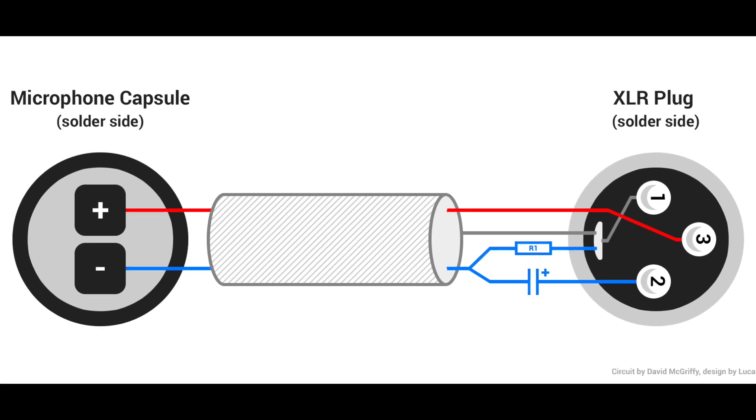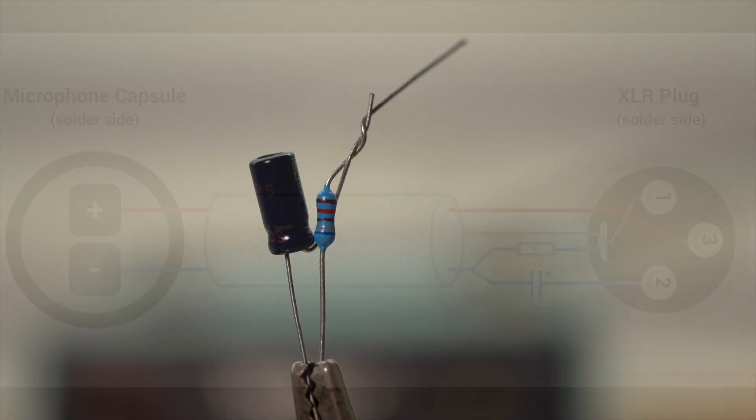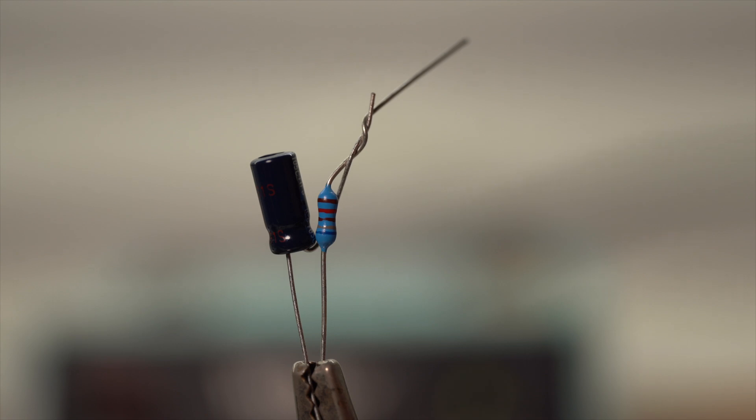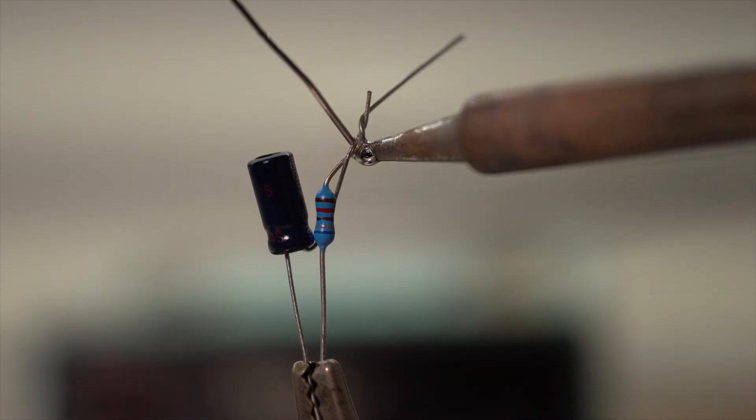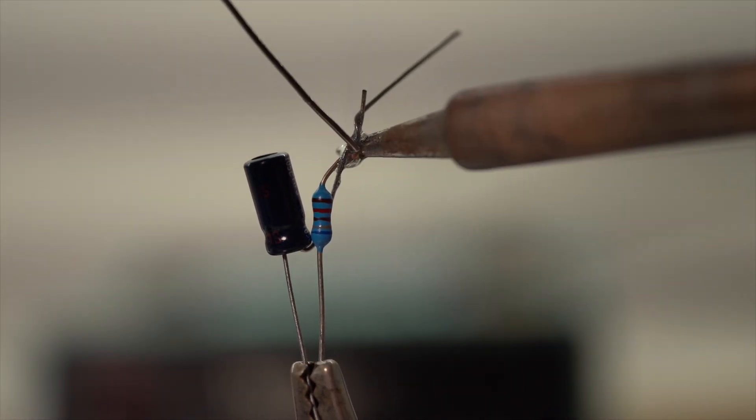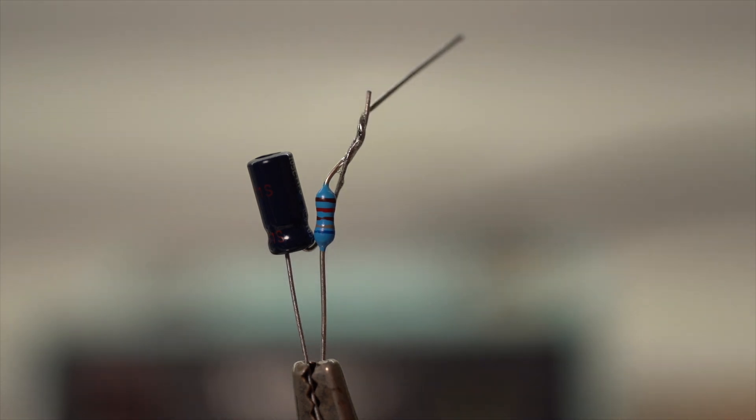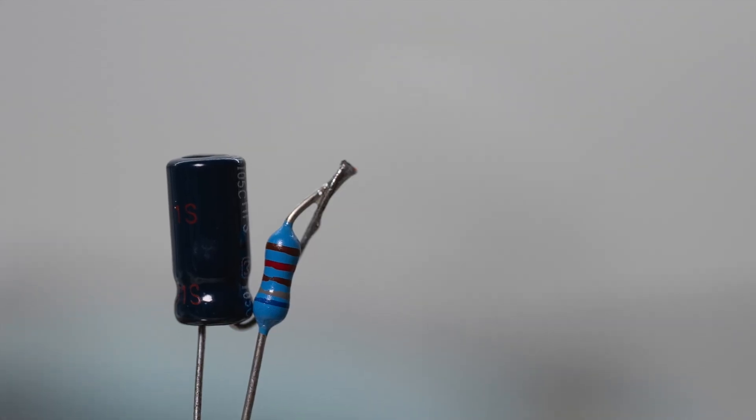One resistor, one capacitor, and an XLR connector. First step is to bend the negative lead of the capacitor upwards and parallel to the capacitor body and twist the cap and resistor leads together. Solder these together and cut off the excess.